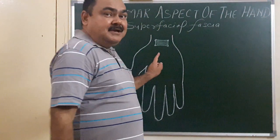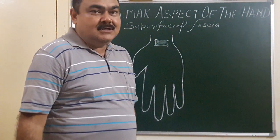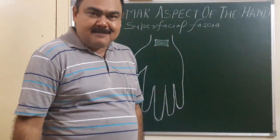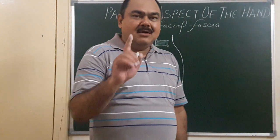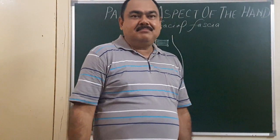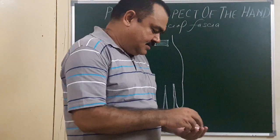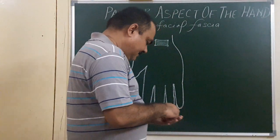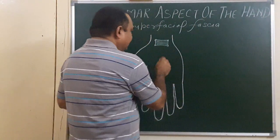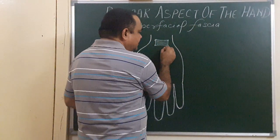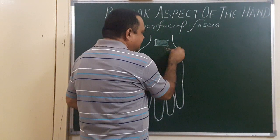The superficial fascia contains numerous cutaneous nerves and one muscle, that is Palmaris brevis. The muscle present here is Palmaris brevis.